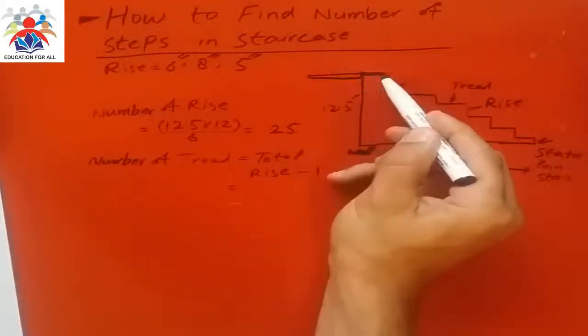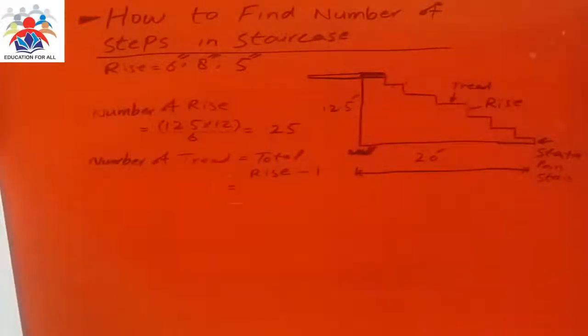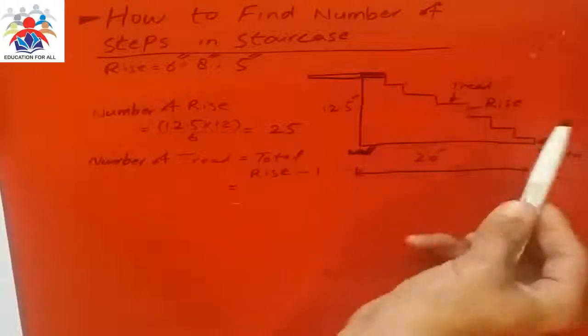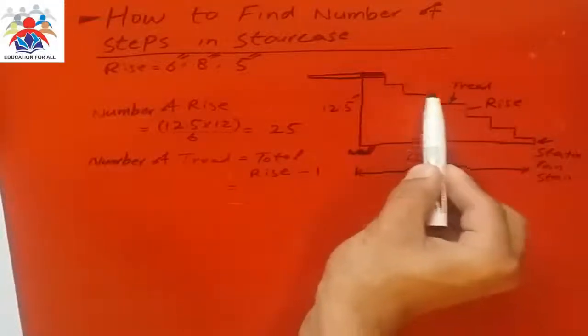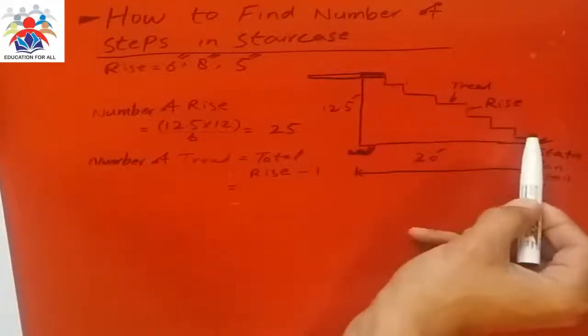This is all floor slab. Just look at this diagram. If you just start counting rises: one, two, three, four, five, and six. We have six rises. And if you calculate the tread, we have one, two, three, four, five.